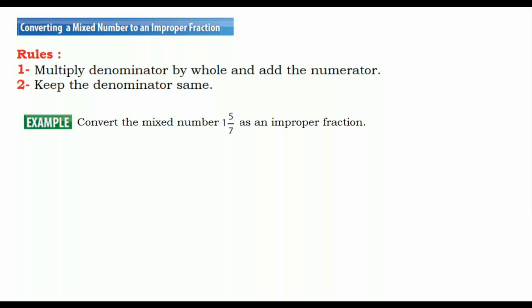Convert the mixed number 1 and 5 over 7 as an improper fraction. First, we write the mixed number 1 and 5 over 7. We apply the rule — multiply the denominator by the whole: 7 times 1 equals 7, then add the numerator: 7 plus 5 equals 12. We keep the denominator the same — 7. The answer is 12 over 7.